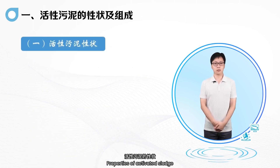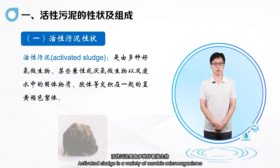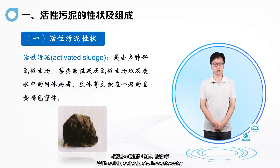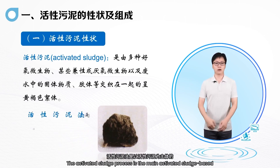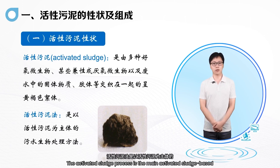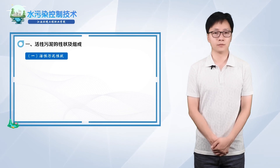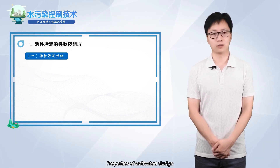Properties of activated sludge: activated sludge is a variety of aerobic microorganisms, certain parthenogenic and anaerobic microorganisms, with solids, colloids, etc. in wastewater, intertwined, appearing as a yellowish-brown flocculant. The activated sludge process is the main activated sludge-based sewage treatment method. So let's learn next about the properties of activated sludge.